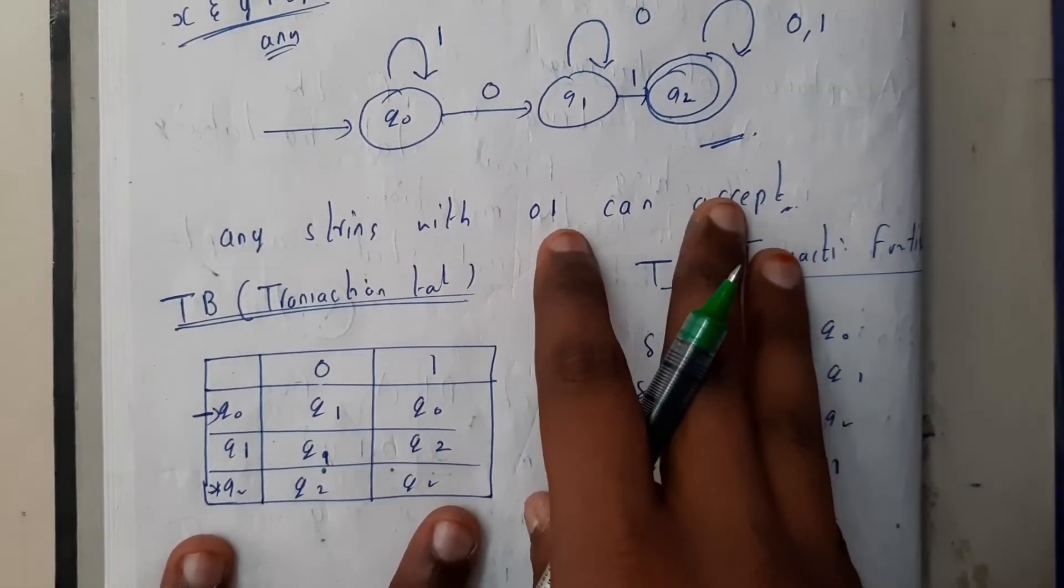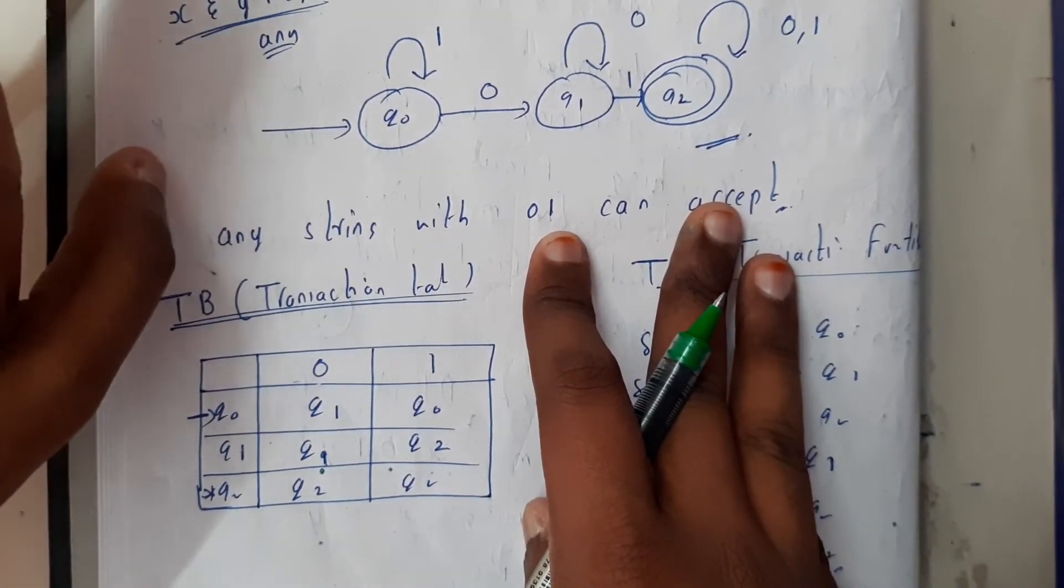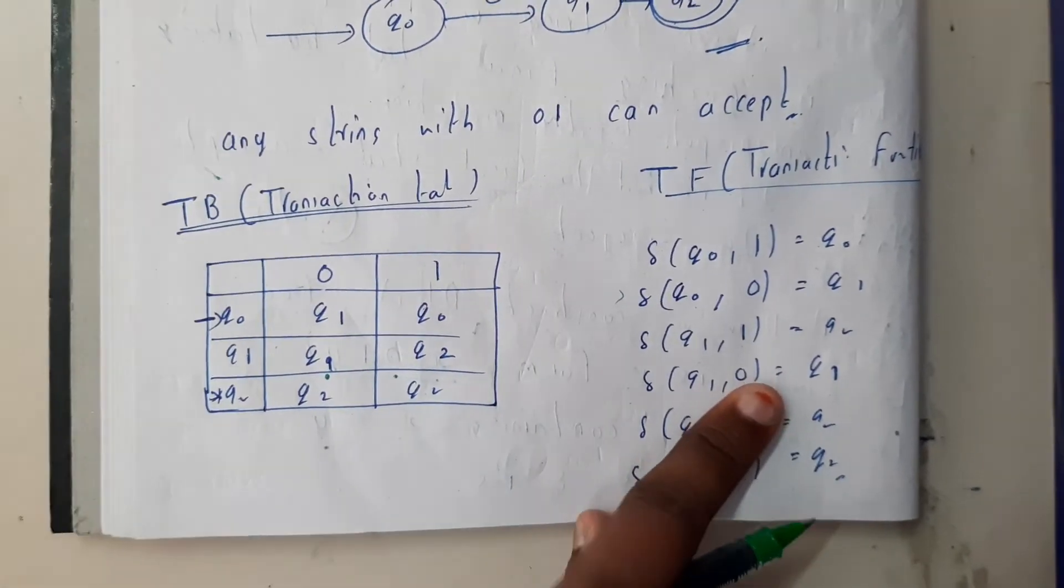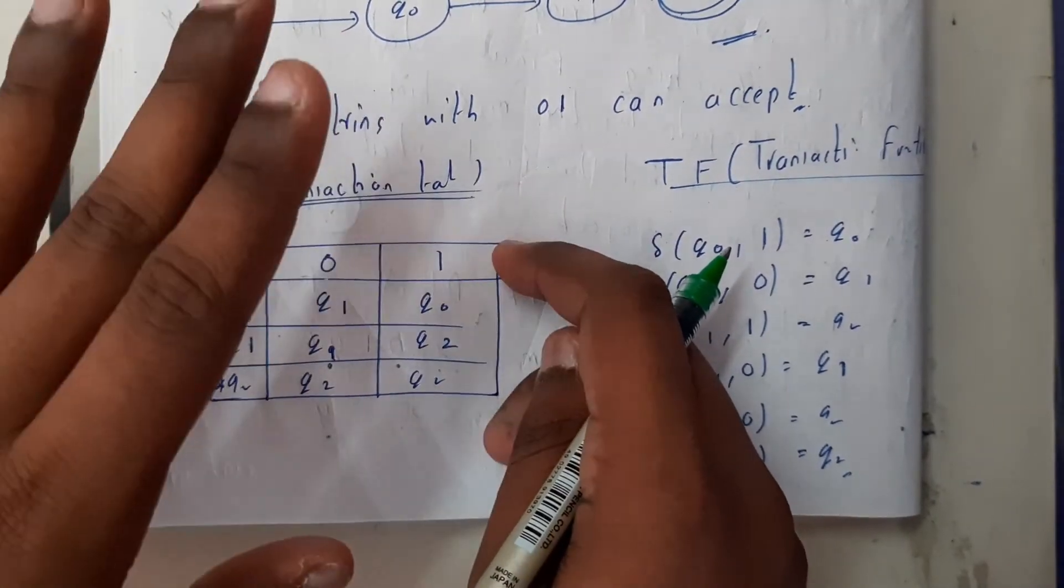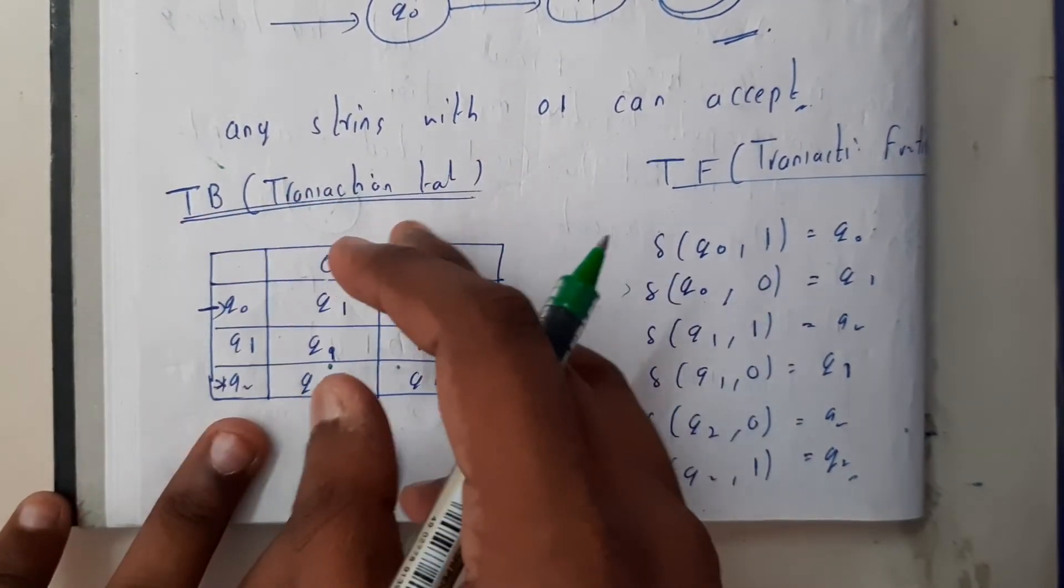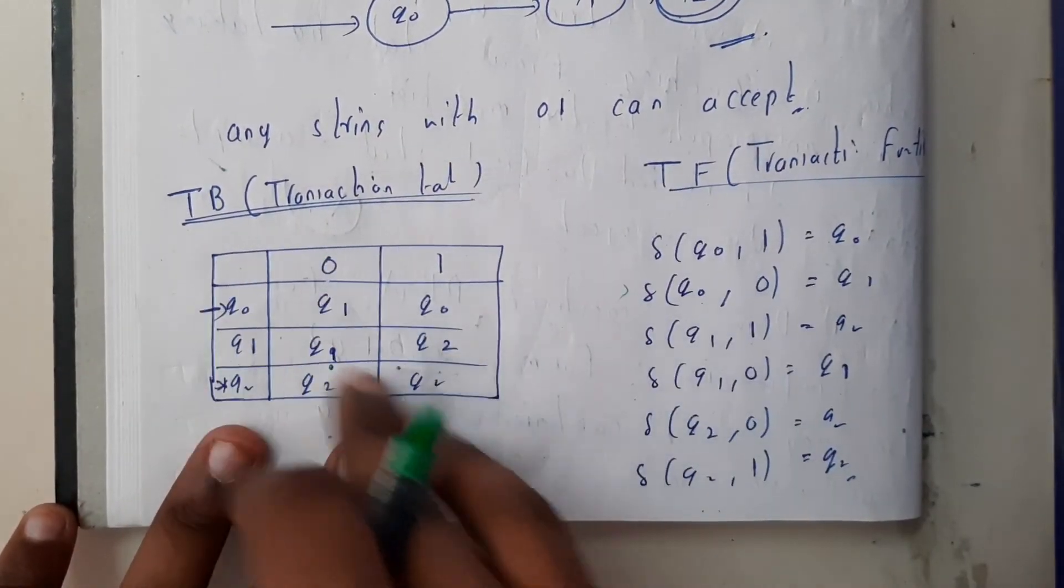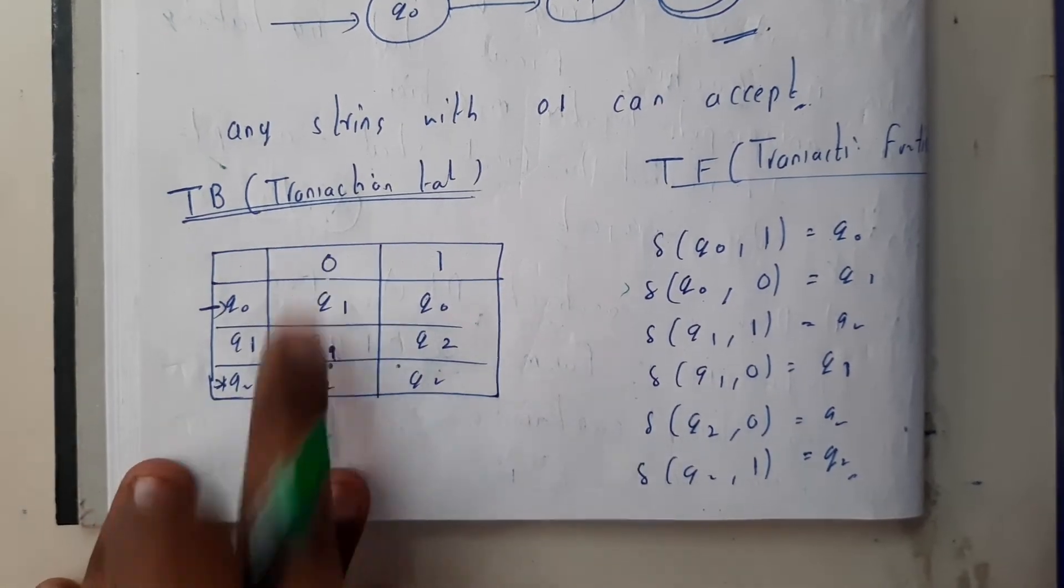I have told you that if this question came for three to four marks or even sometimes for two marks, try to draw the table and transition because it's really simple and easy. If they specified only construct, then only construct it and leave it. If they didn't mention and just ask you to draw finite automata, then draw and according to marks manage these two things.